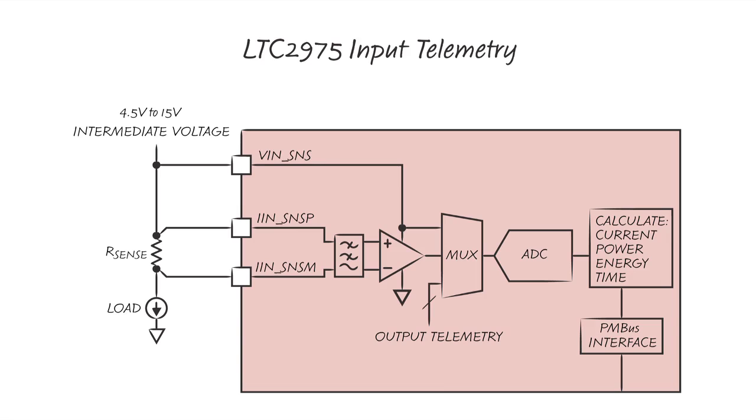Voltage at the current sense input scales by the input sense resistance, so the result is reported as input current in amps. Input voltage and input current then multiply, and the resulting power product is integrated over time to produce an energy measurement.